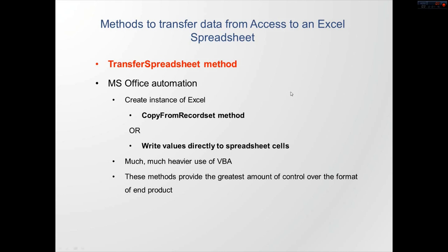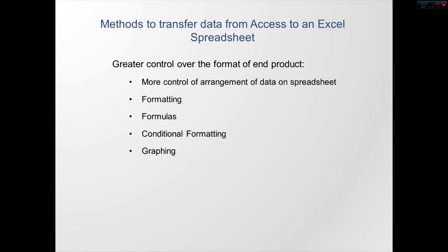If you need more control over the format of the final spreadsheet, you'll need to automate Excel. In other words, we can use Access to start up an instance of Excel, open up a spreadsheet, and put data into that new spreadsheet. There are two methods I've used with automation: the CopyFromRecordset method, which we'll cover in the next video, and writing values directly to spreadsheet cells, which I'll cover in the third video. Office automation has pros and cons. One con is that there's a lot more VBA you have to write. However, it gives you the greatest amount of control over the appearance of your spreadsheet — you can arrange data differently, use all Excel formatting commands, put formulas in, add conditional formatting, and even do some graphing.